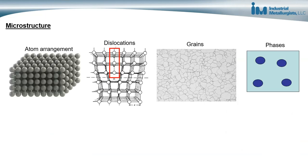There are various aspects of a metal microstructure that are important to us. There's the arrangement of atoms, there are dislocations in metals, there are grains, and also metallurgical phases that are present in metals. These various microstructure features influence the properties of metals.